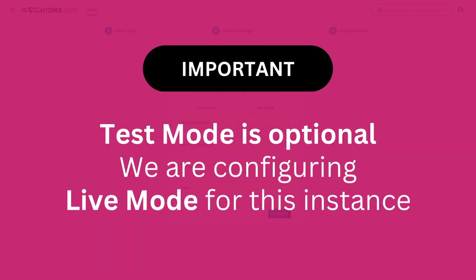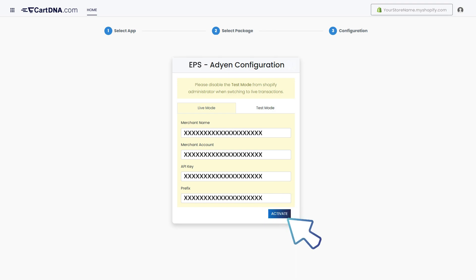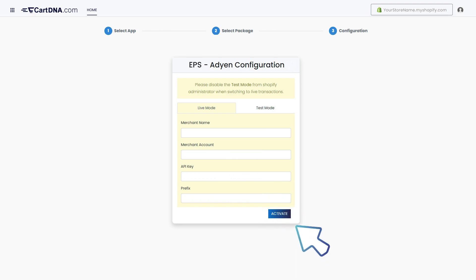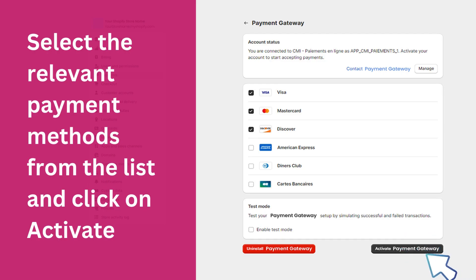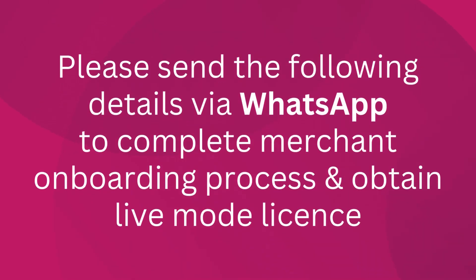We are configuring live mode for this instance. Enter the credentials that you extracted from your AddYen account and click on Activate. Select the relevant payment methods from the list and click on Activate. Your payment app is installed. Please send the following details via WhatsApp to complete the merchant onboarding process and obtain the live mode license.